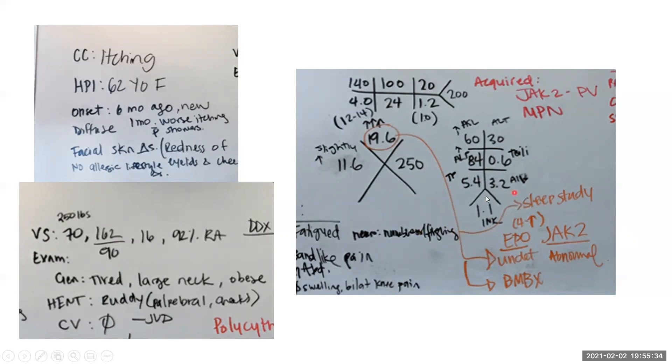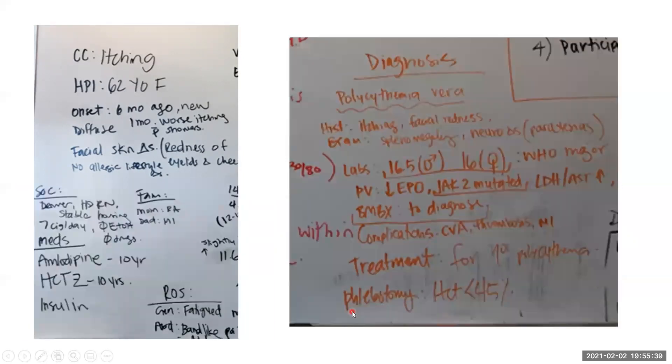And then ultimately, depending on the results of these, potentially a bone marrow biopsy. This patient's EPO level was low, and she did have a JAK2 mutation detected, and so ultimately she was diagnosed with polycythemia vera.